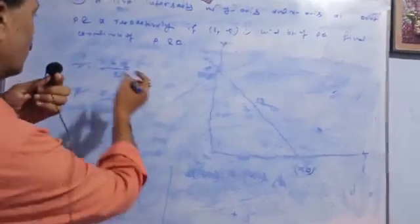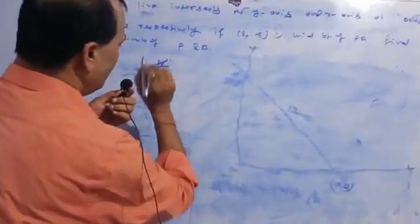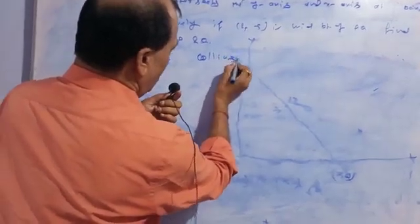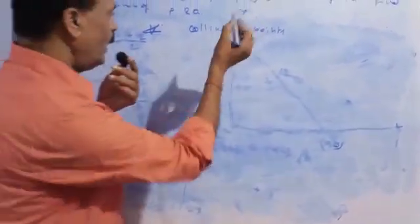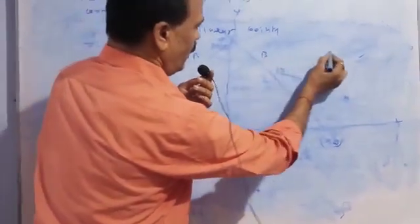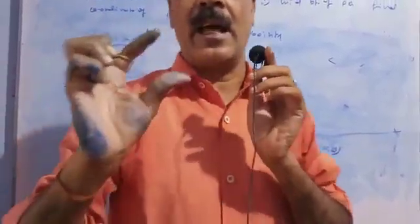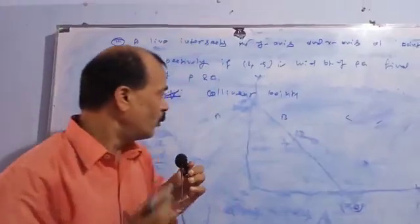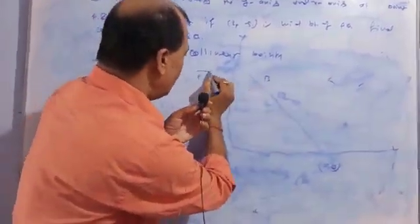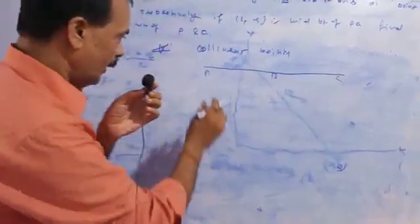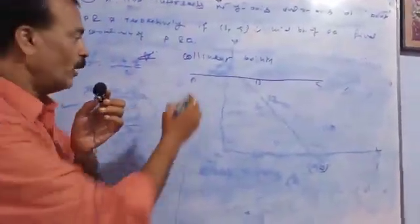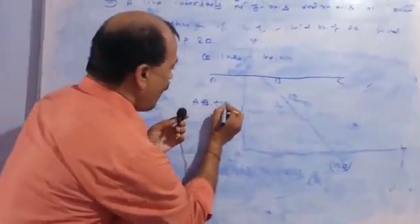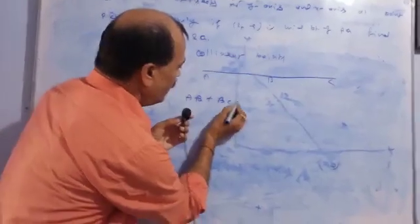Now one point is left from the previous video: collinear points. Condition for collinear points — I am explaining to you. Suppose we are given three points. Collinear points are all points which lie on a straight line — those are called collinear points. Suppose A, B, C. If they are collinear then they must lie on a straight line, so AB plus BC equals AC.